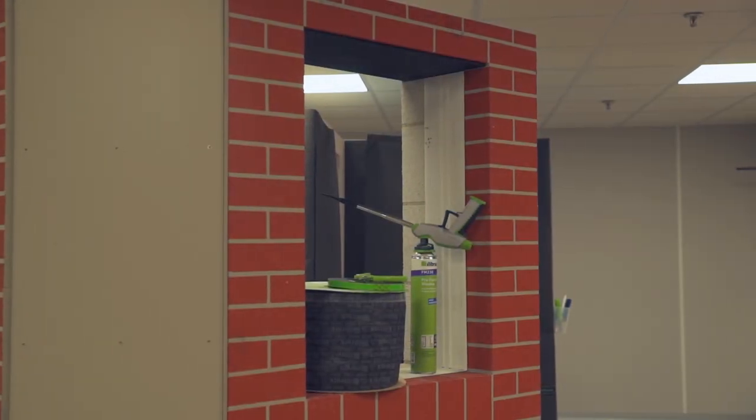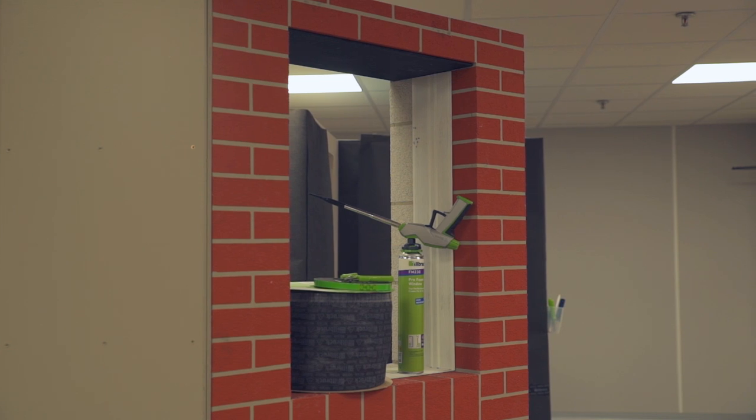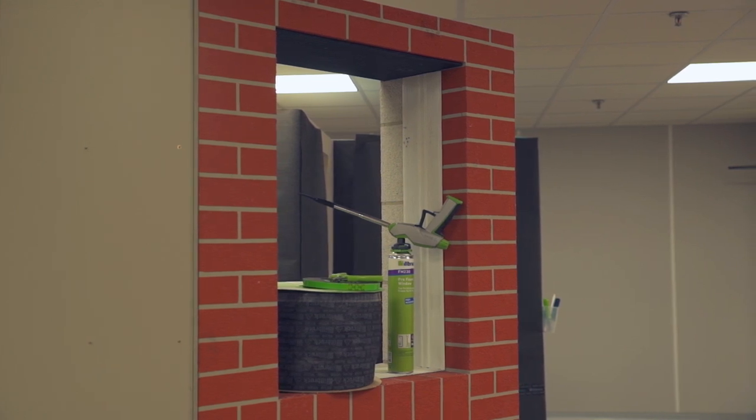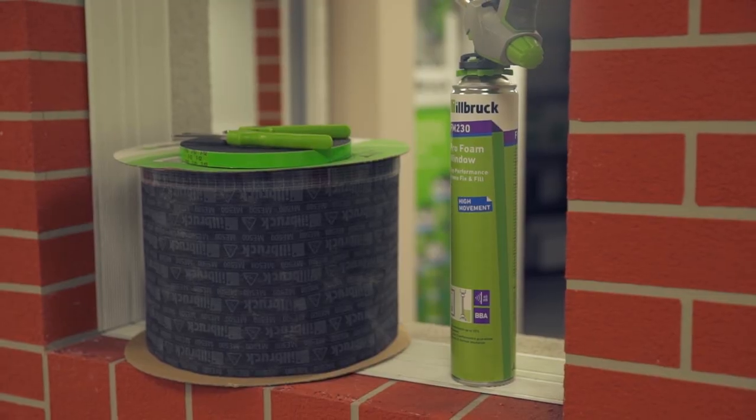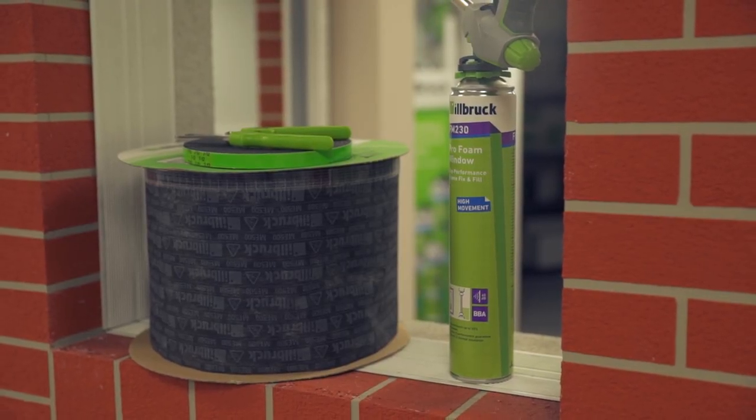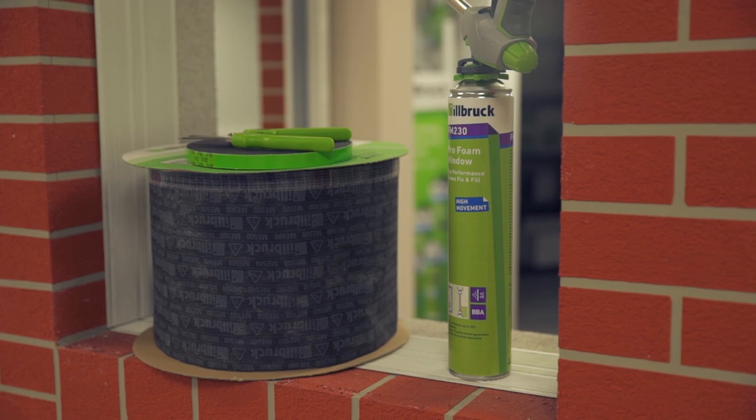This video shows the installation of a PVC-U window into a brick-and-block reveal with cavity and the Ilbrook I3 system applied as the perimeter seal, providing the benefits of weather-tightness, thermal insulation, and air-tightness.